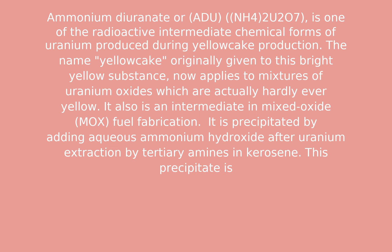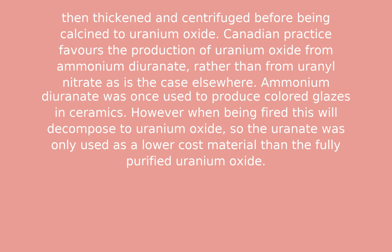It is also an intermediate in mixed oxide fuel fabrication. It is precipitated by adding aqueous ammonium hydroxide after uranium extraction by tertiary amines in kerosene. This precipitate is then thickened and centrifuged before being calcined to uranium oxide.